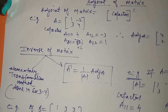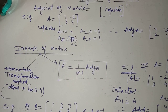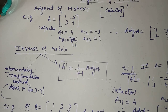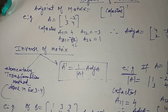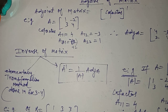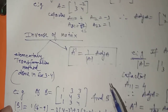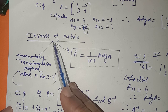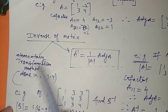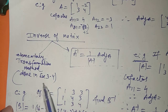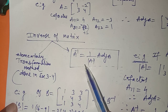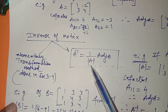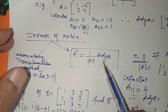Now, for the inverse of a matrix — we have discussed invertible matrices before. If the product of two matrices is an identity matrix, i.e., A × B = I, then A is the inverse of B or B is the inverse of A. We can find the inverse using two methods: the elementary transformation method done in Exercise 3.4, or here we will use the formula: A⁻¹ = (1/|A|) × adj(A).